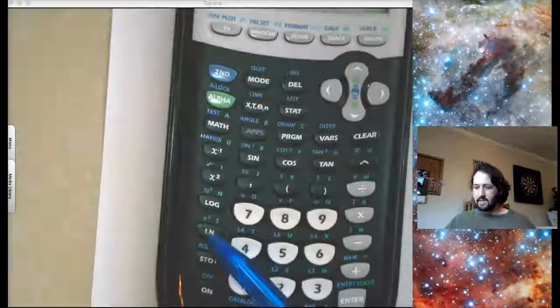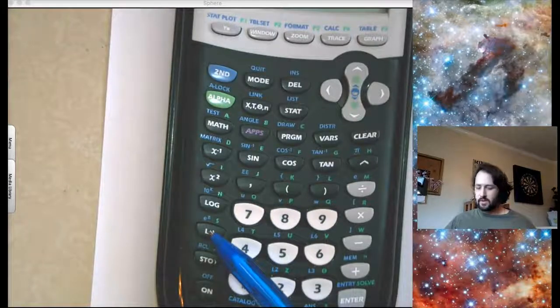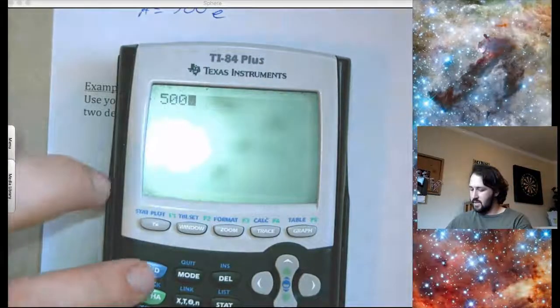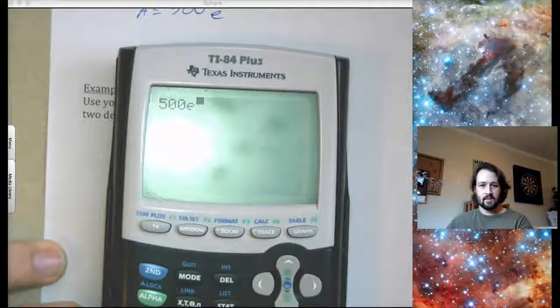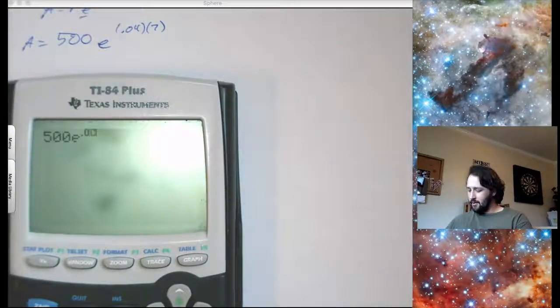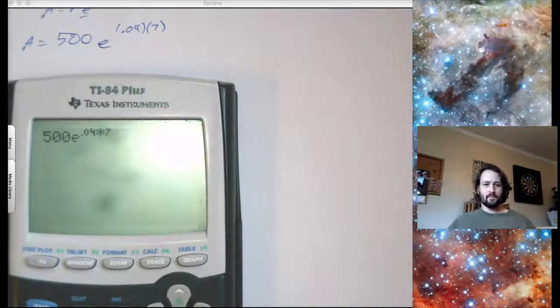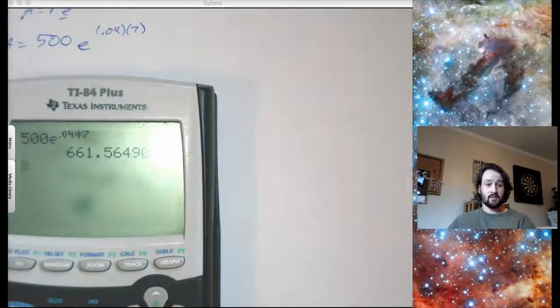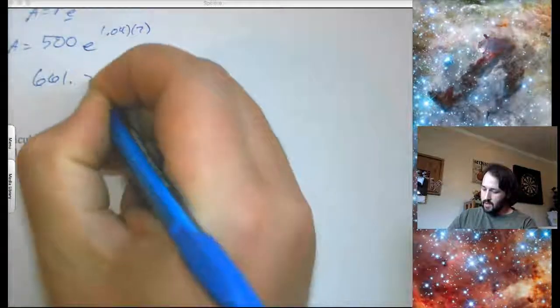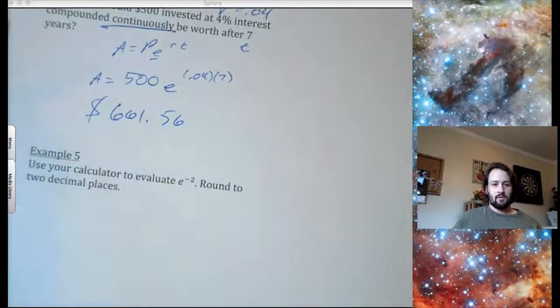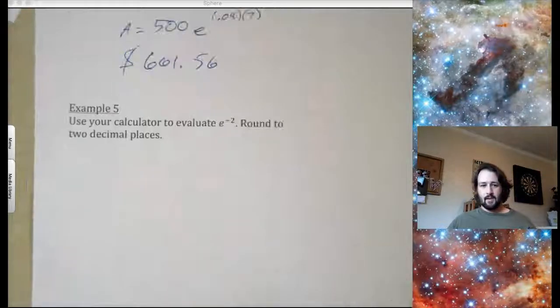So now they also have an E to the button. It doesn't matter which one you use. I like to use the E to the button. So if you hit second, since it's in blue, I need to hit second. And then it raises it to the power for me. So I'm going to do the, oh gosh, 0.04 times 7. Press enter. And it gives me my answer. Look at that. Super fancy. So 661.56. 661.56 dollar dollar bills, yo. That was way off the screen. Yes.